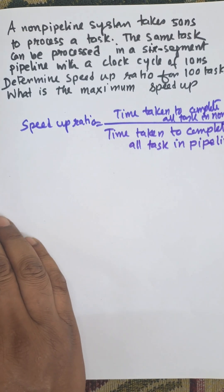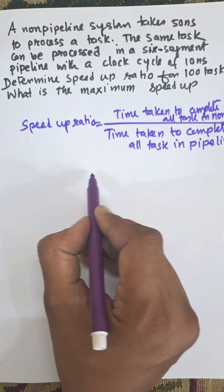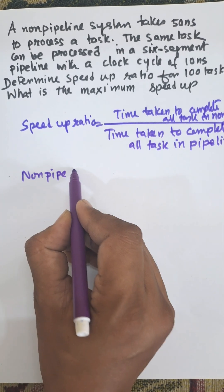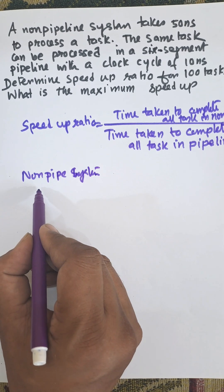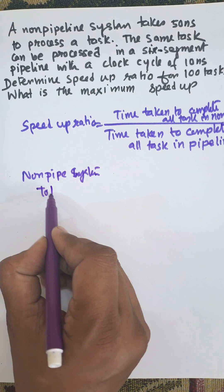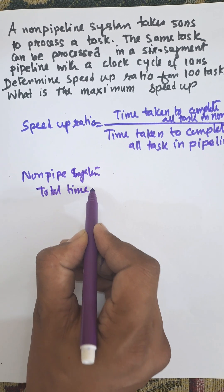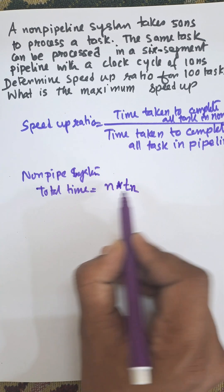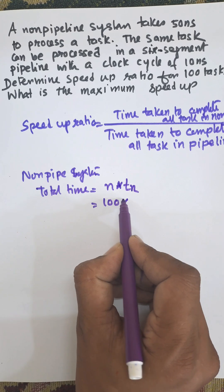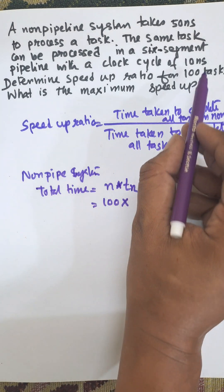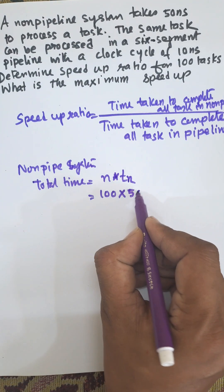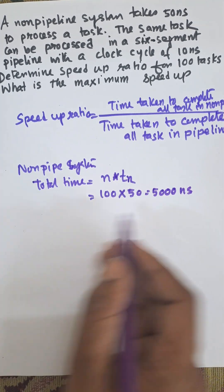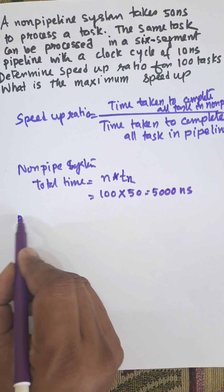Now the calculation of the total time in the non-pipeline system. Non-pipeline system total time equals number of tasks n multiplied by the time taken per task in the non-pipeline system — that is 100 tasks and a time for each task of 50 nanoseconds. So total time is 5000 nanoseconds.